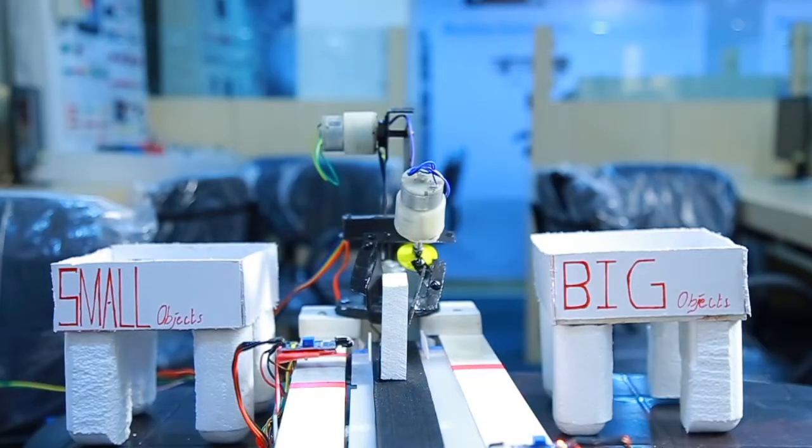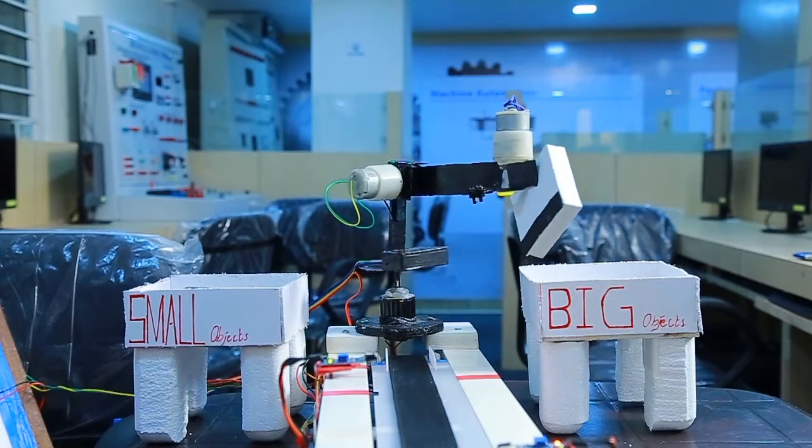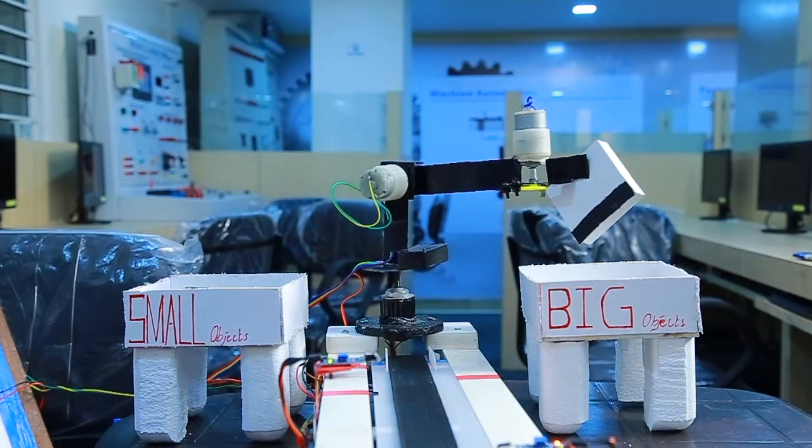If the object is big, the size sensor will be on and the robotic arm will place the object to the right. Otherwise, the robotic arm will place the object to the left.